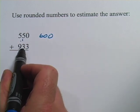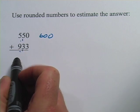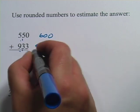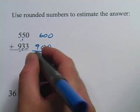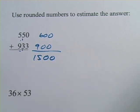Same with the 933. We take a look at the next digit over. If it's less than 5, we round down, so that goes to 900. We add those together, and you probably can do this pretty quickly in your head. 6 plus 9 is 15, so this is 1500. What you get here is a ballpark answer really quickly. That's the benefit of rounding to estimate.